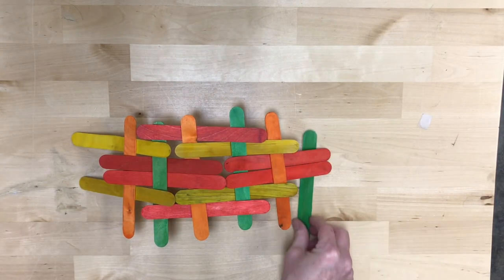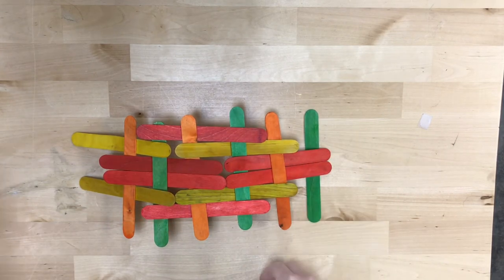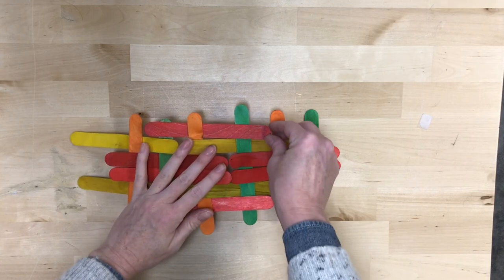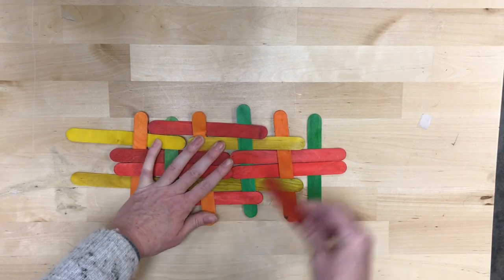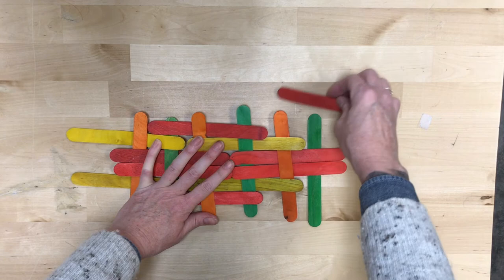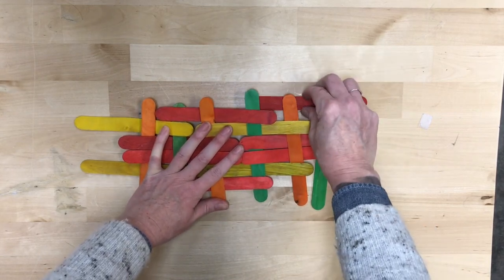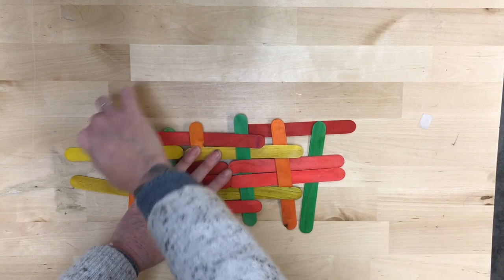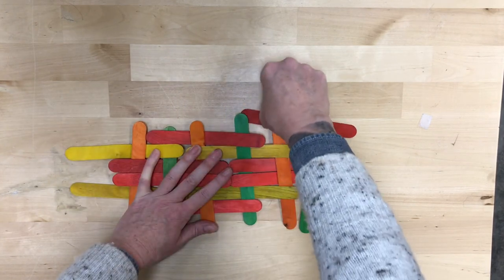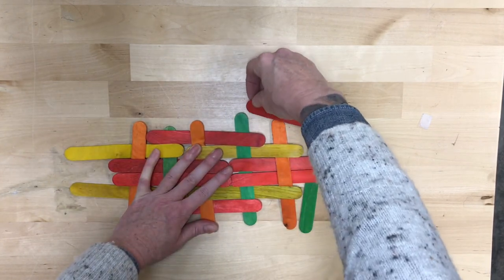Okay. Now we just have a couple more sticks left to go. So we've got these red ones. And it's the same thing. We're going under and over different sticks. So that red one is going to go over the orange and under the green.